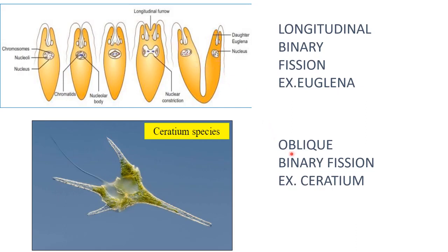In oblique binary fission, the example is ceratium. The plane of division is oblique in ceratium. This type of fission is called oblique binary fission.